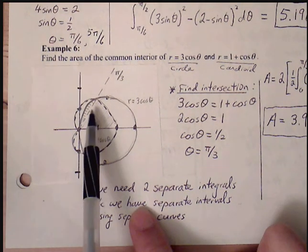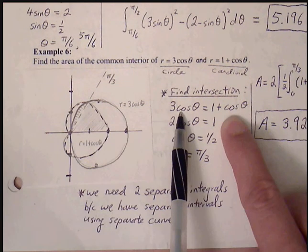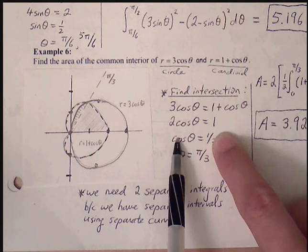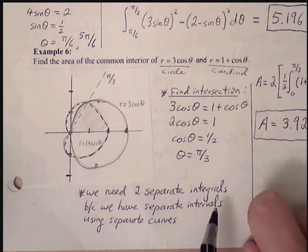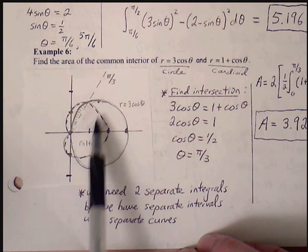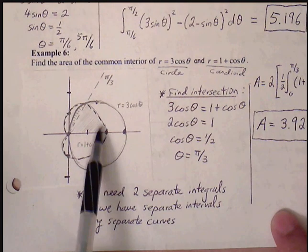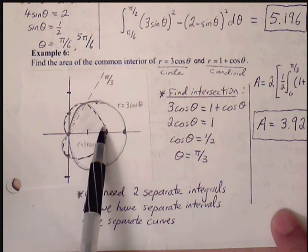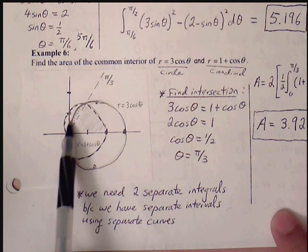First, let's find the intersection. Setting 3 cosine theta equal to 1 plus cosine theta: combine to get 2 cosine theta equals 1, so cosine theta equals one half. Cosine equals one half at pi over 3 and 5 pi over 3, but we only consider the first quadrant. So from 0 to pi over 3 we use the cardioid, and from pi over 3 to pi over 2 we use the circle 3 cosine theta.